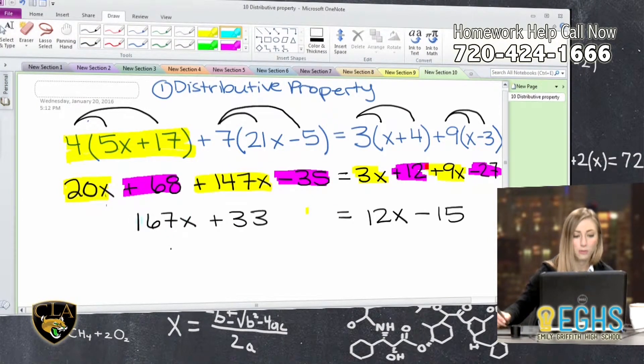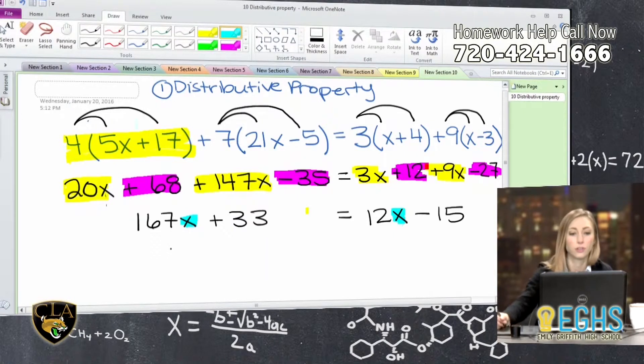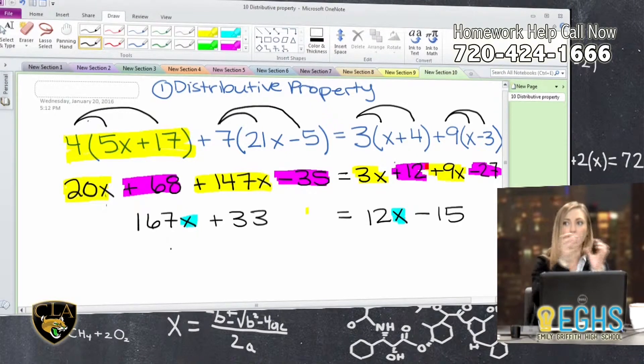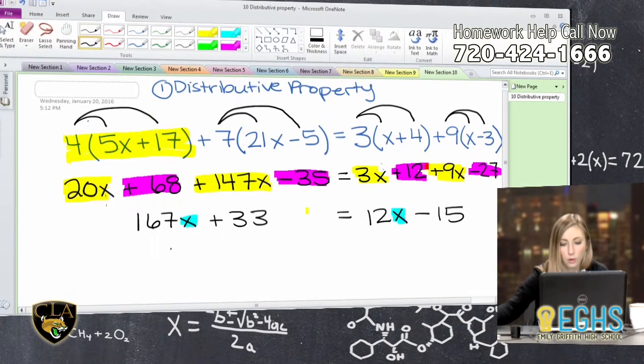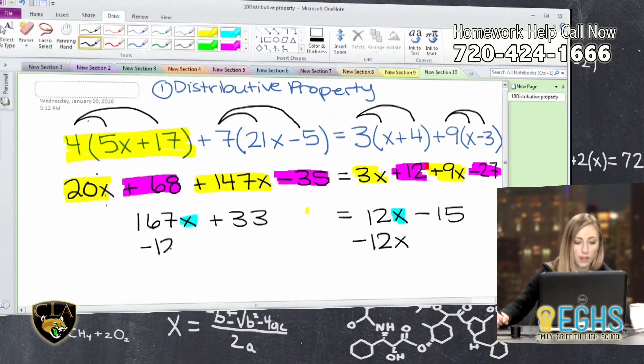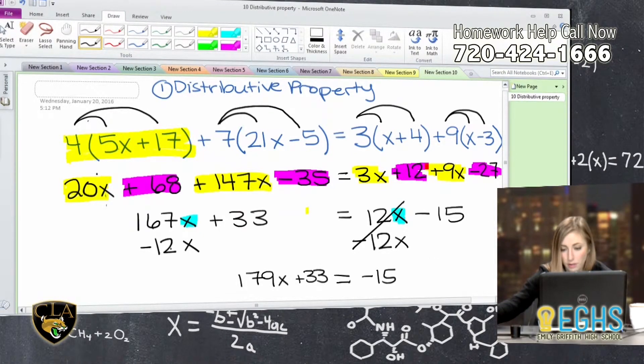One thing that tends to throw people off is the fact that we have variables on both sides of the equation. And it is kind of a problem. And the way that we can solve it is just by getting our variables all on one side of the equation. I tend to put all the x's on the side that has more of them already. So I'm going to take this 12x, I want to move it to the left side of the equation. In order to move it, I have to do the opposite of what is there, which means subtracting it. So I'm going to subtract 12x from both sides of my equation. What happens on the right is 12x minus 12x, that gives us 0. So we're just left with negative 15.